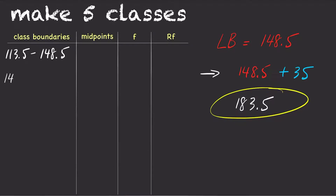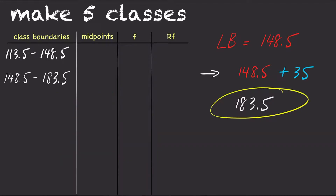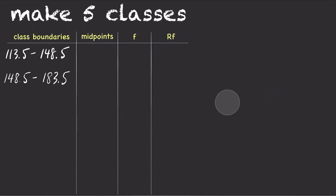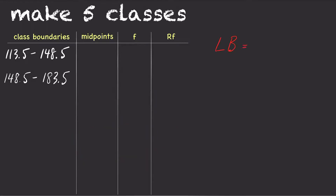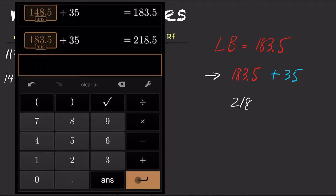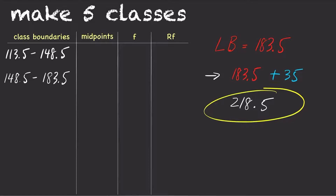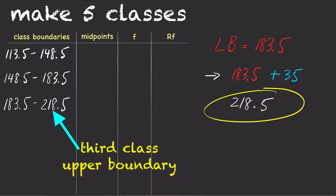To recap, our second class begins at 148.5 and goes up to 183.5, where the class width is 35. For the third class, the lower boundary begins where the second class ended. So in this case, the lower boundary for the third class is 183.5. Add the lower boundary by the class width, which is 35. So 183.5 plus 35 equals 218.5. This is our third class upper boundary. To recap, our third class begins at 183.5 and goes up to 218.5, where the class width is 35.